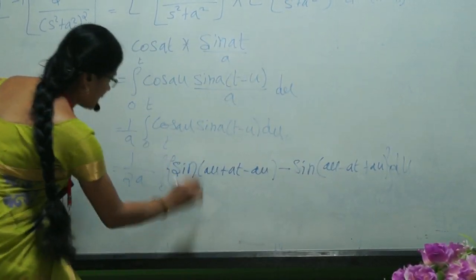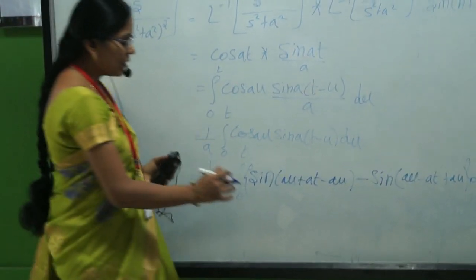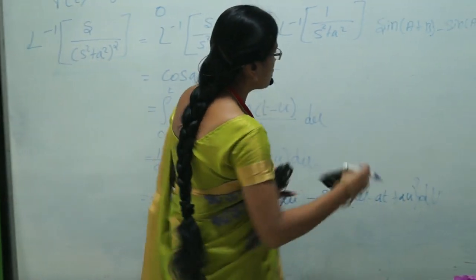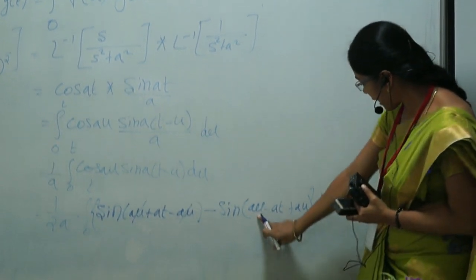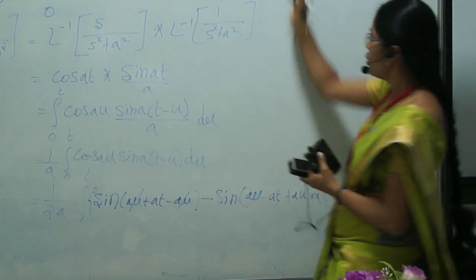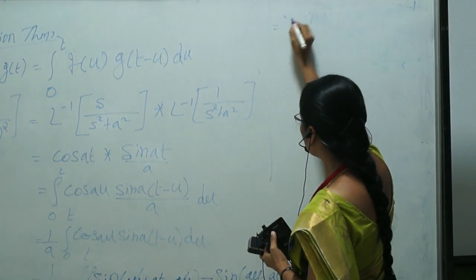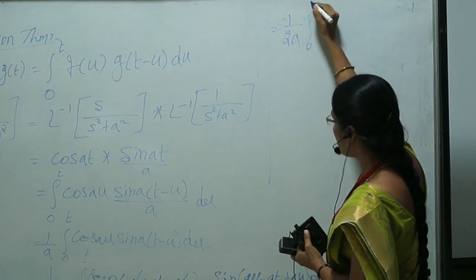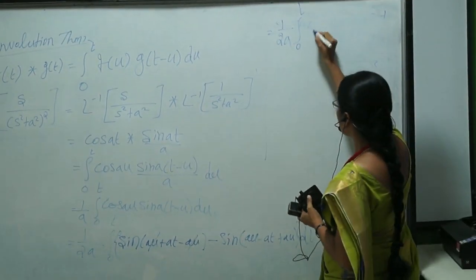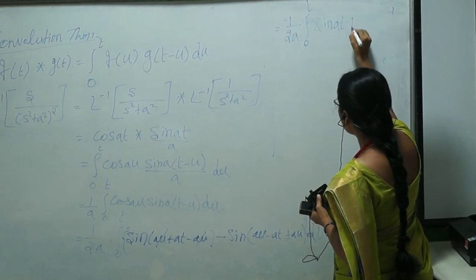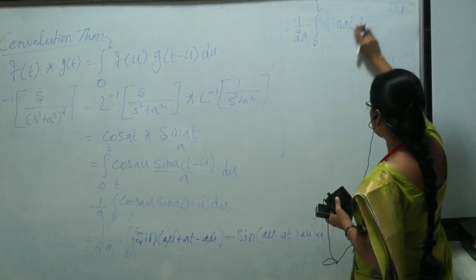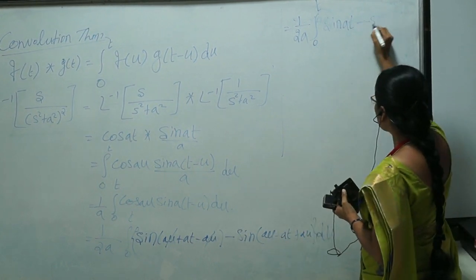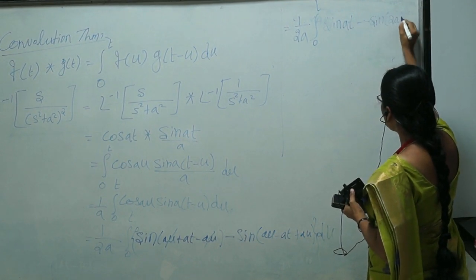Integrating: 1/(2a) times integral from 0 to t of sin(at) du minus integral of sin(2au − at) du. Since sin(at) is constant with respect to u, integrating gives u·sin(at). For sin(2au − at), the integration with respect to u gives −cos(2au − at)/(2a).